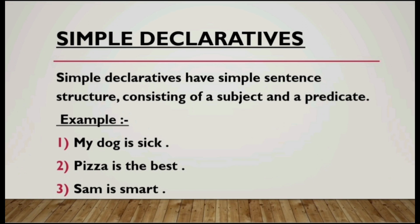Have a look at these examples. The first one is 'My dog is sick' — it is giving us basic information. The second one is 'Pizza is the best' — it is giving us simple information. Similarly, 'Sam is smart.' These are all simple declaratives consisting of just a subject and a predicate.